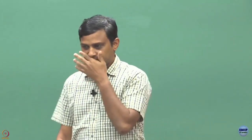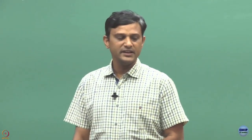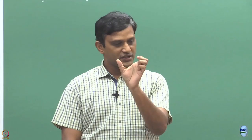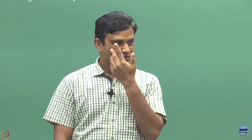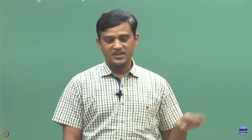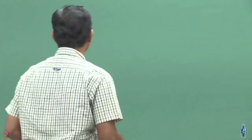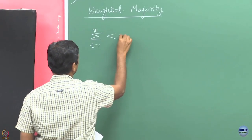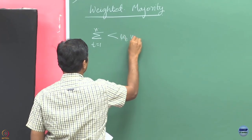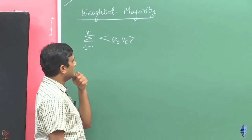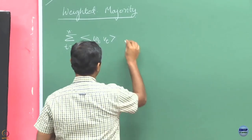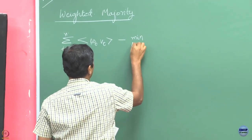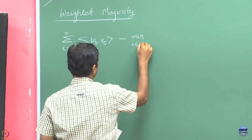If you recall the weighted majority algorithm we did in the last class, it was in a setting we called prediction with expert advice. In each round, the environment assigns a loss value to each of the experts, and the learner picks one of the experts according to some distribution which it keeps updating every round based on past observations. We defined the expected regret in this case as the total loss incurred over n rounds compared with one of the d experts.